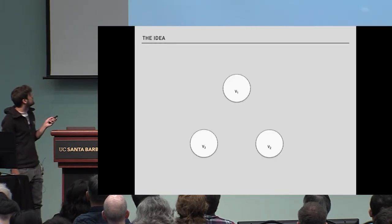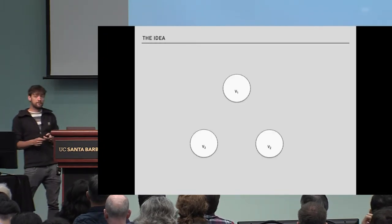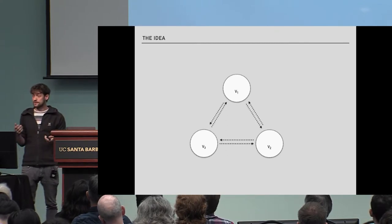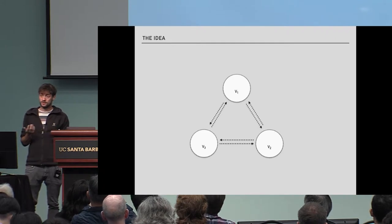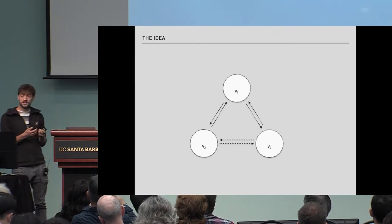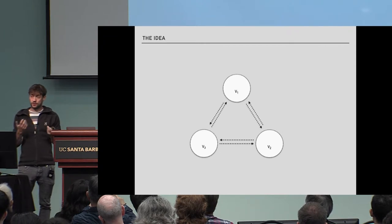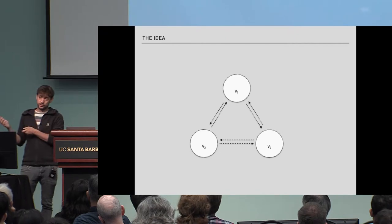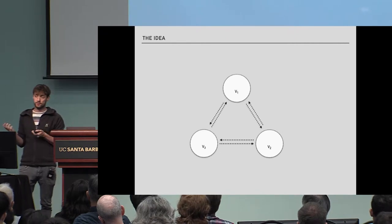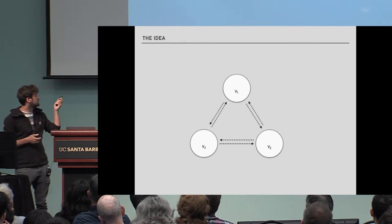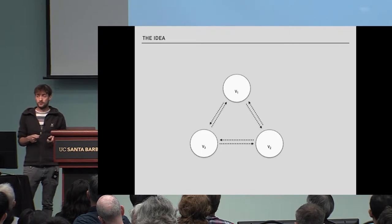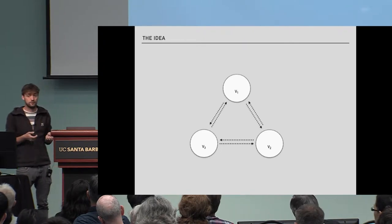Imagine we have three virtual parties V1, V2, and V3, and we are given some semi-honestly secure protocol that tells us how to compute some functionality. These three virtual parties would like to run this protocol. If the protocol says V1 sends a message to V2, we simulate this in some way. If none of V1, V2, or V3 misbehave and they all behave honestly, the semi-honest security guarantees tell us they learn nothing apart from the output and what they learn from their input.